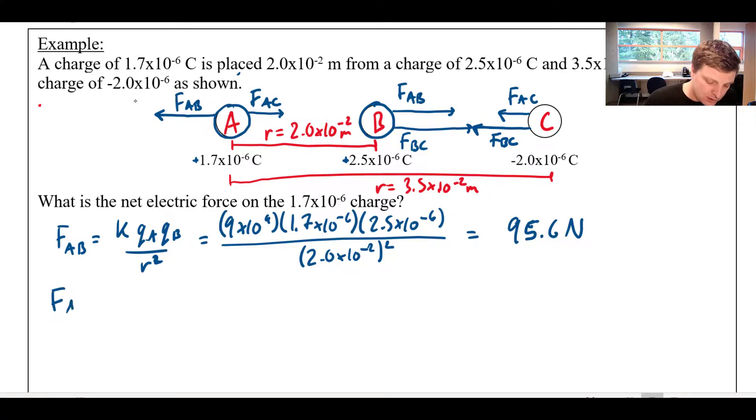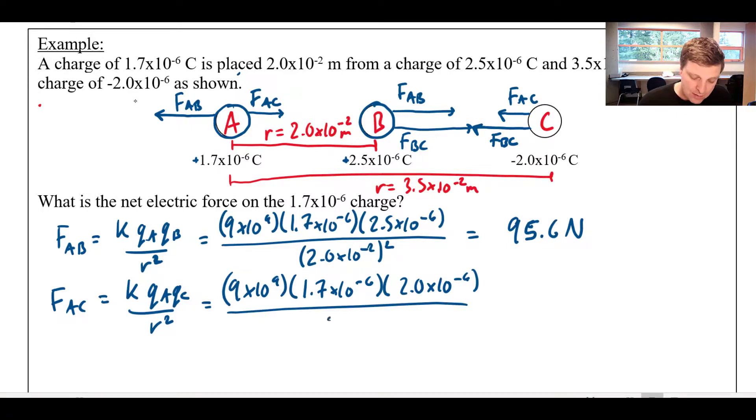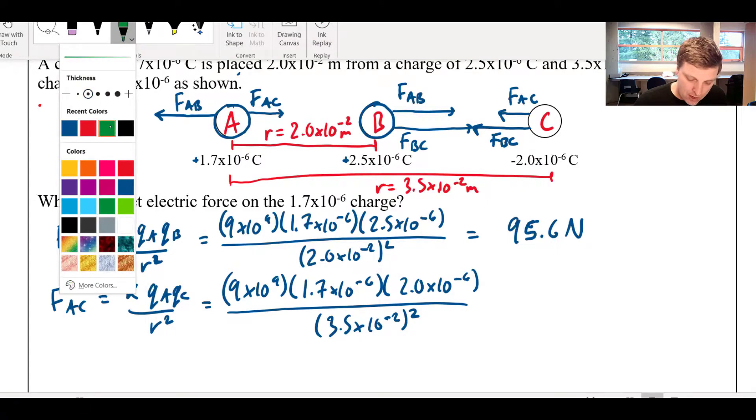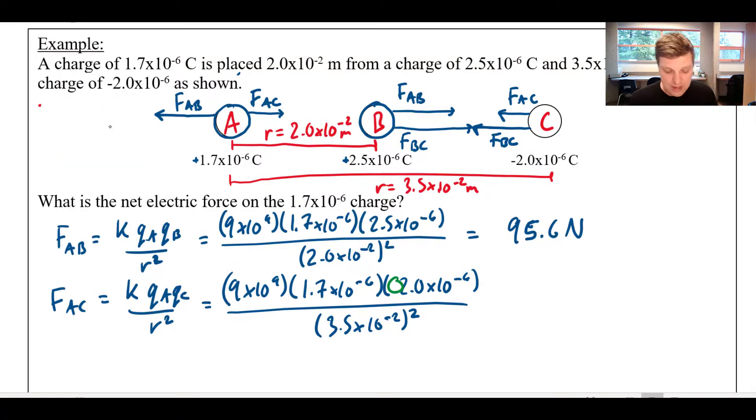For the second force there, force AC, that would be the K value times QA times QC, all divided by their separation. So that would be 9 times 10 to the 9, and then times 1.7 times 10 to the negative 6, and then times 2.0 times 10 to the negative 6, divided by 3.5 times 10 to the negative 2. Now, this might be the point where you're like, wait a second, Mr. Trask, why no negative sign right there? And the reason I'm not going to bother with the negative sign there is, it's not really going to help me figure out the direction. I know the direction of that force, because when I look back at my picture, I know that that force is to the right. And I figured that out before I did any of my calculations.